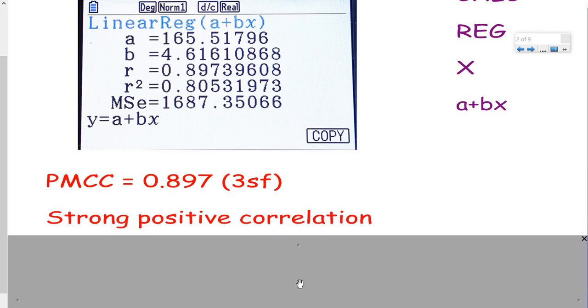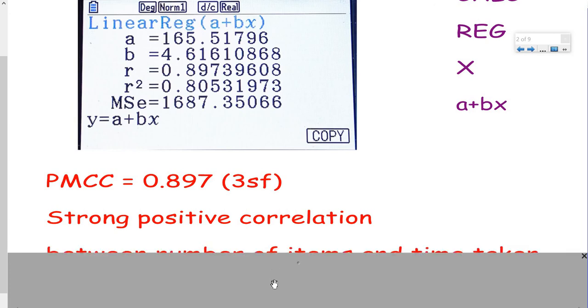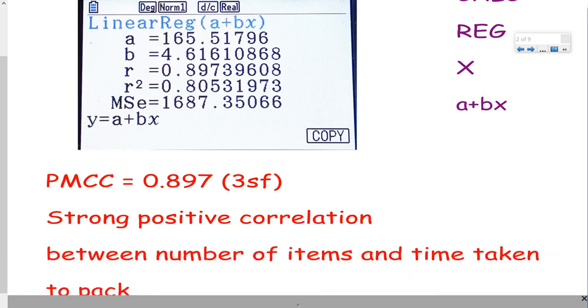Rounded to three significant figures. So that's a strong positive correlation. This question said in context - really important to relate it back to the question. Between the number of items and the time taken to pack.